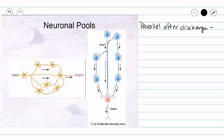Lastly, we have a parallel after discharge circuit. This is going to combine a diverging circuit with a converging circuit. The key here is that our signal is going to arrive at our target cell at differing times because we have a different number of neurons involved in each of those pathways.